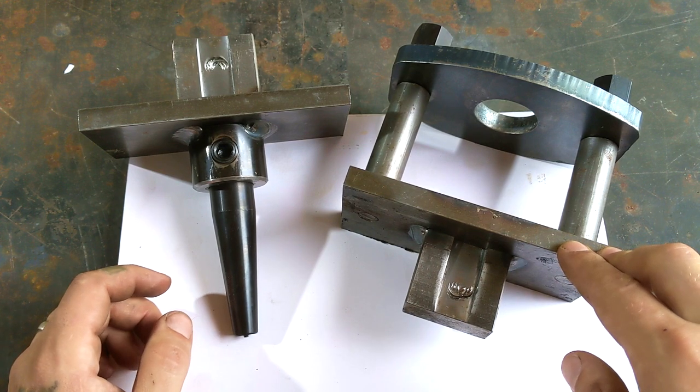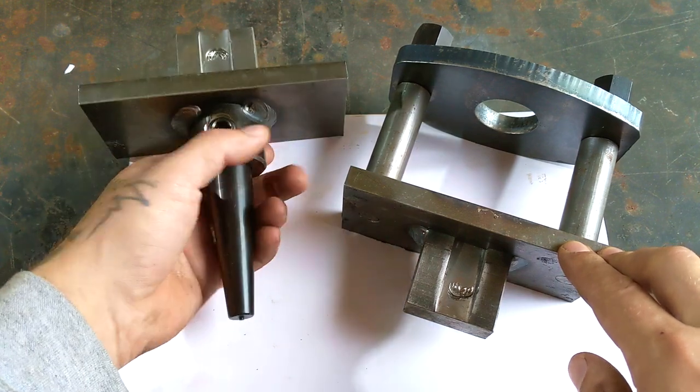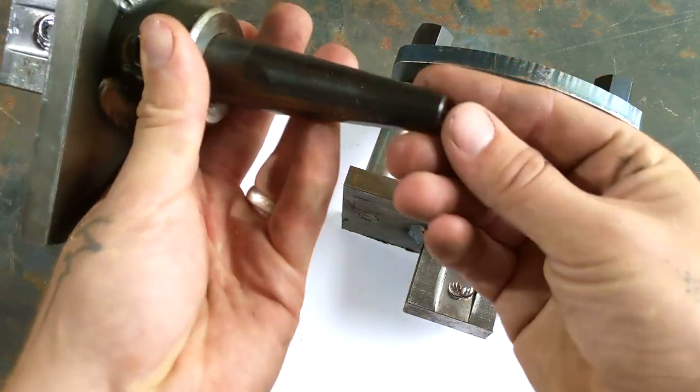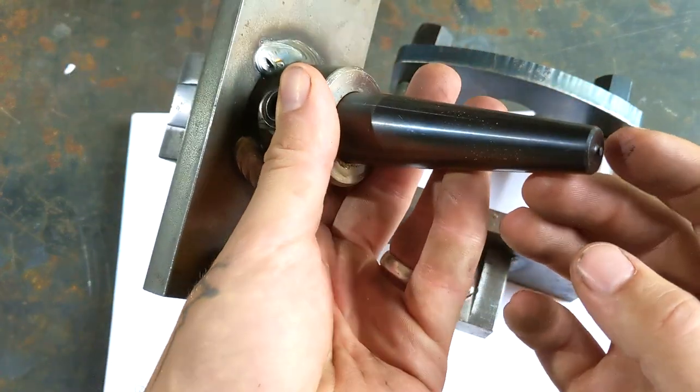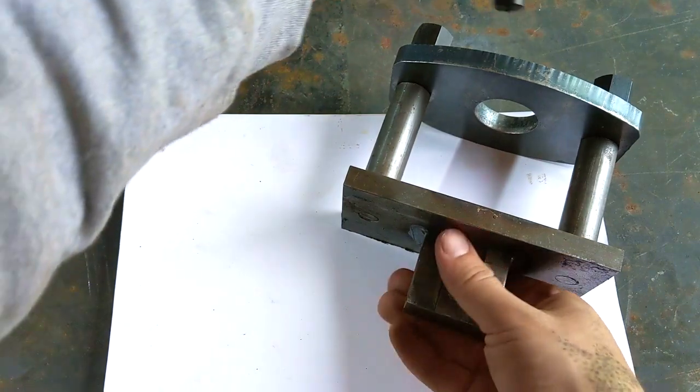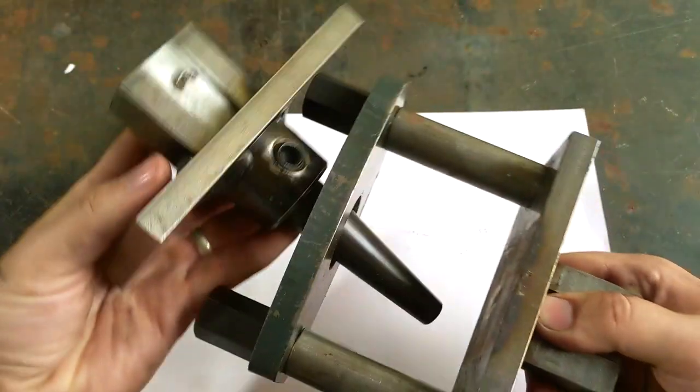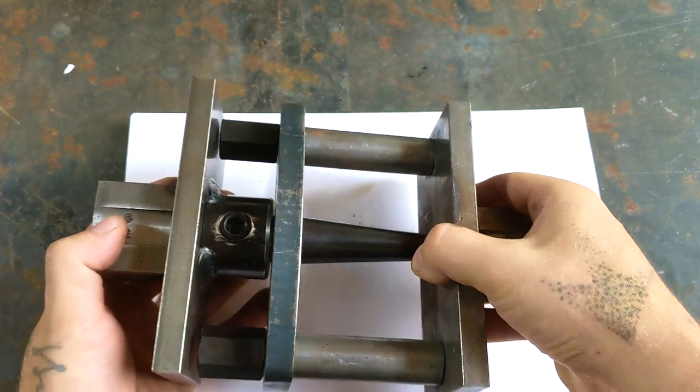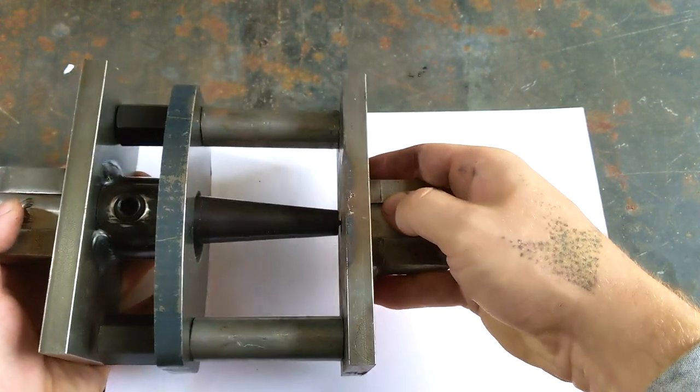One of the things that I noticed that was really helpful with this specific die set is on the end here, if you can see that, there's a little node. And when this die set comes together, that node is the first thing to touch. See that?